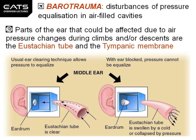If we climb rapidly in an aircraft, the pressure outside our ear decreases, and the pressure inside our middle ear was 1013hPa which will now be higher. This higher pressure escapes via the eustachian tube, which is wider at the end known as the nasopharynx — your mouth.